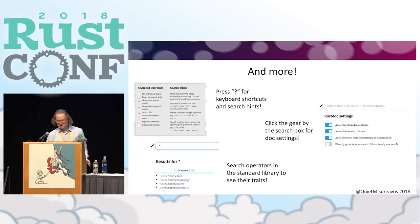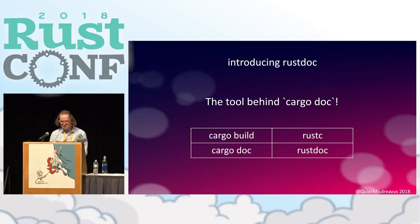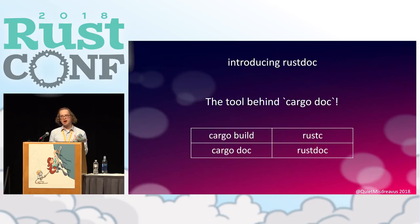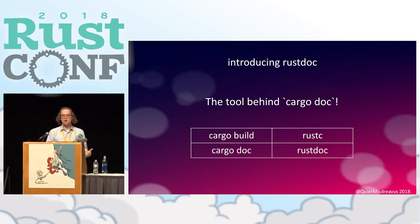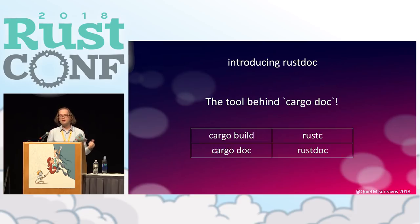When you run CargoDoc, much like when it compiles your code with CargoBuild or CargoRun, Cargo just shells out to another tool that comes with the Rust distribution — that tool is called RustDoc. So much like when you run CargoBuild it actually builds up a command to rustc the compiler, when you run CargoDoc it builds up a command to RustDoc so that it can create your documentation.